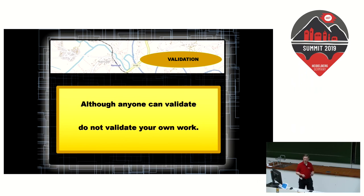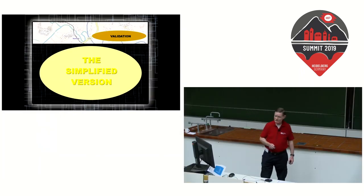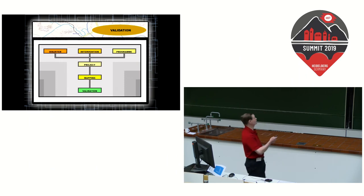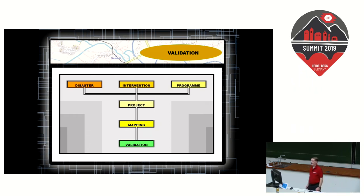Although anyone can validate, do not validate your own work — and that still is in the teachings of today. We don't take it out because it is historical and it is how OSM actually thinks. OSM says everyone must be able to map and must be allowed to change anything if they think it's wrong. In the simplified version: disaster activations, medical interventions, and various humanitarian programs led to creating a project, which got mapped, and some mappers then did the validation — the second pair of eyes.